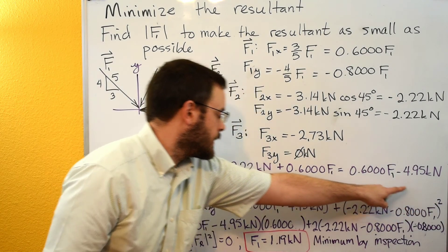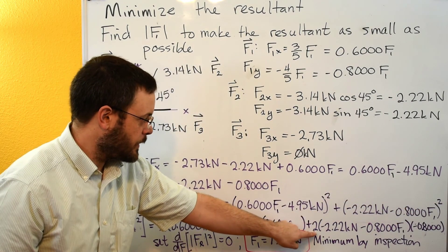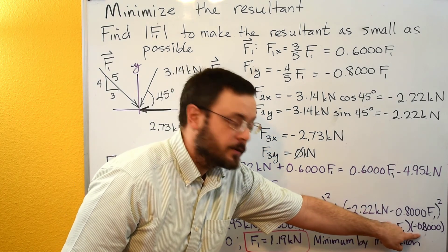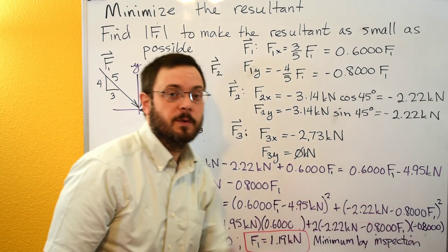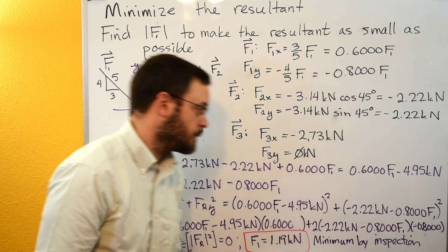And then same thing with this. We have the 2 here, so 2 would come out in front. We would have our expression here. And then we would have the derivative of the expression with respect to F1, which would just be the negative 0.8.